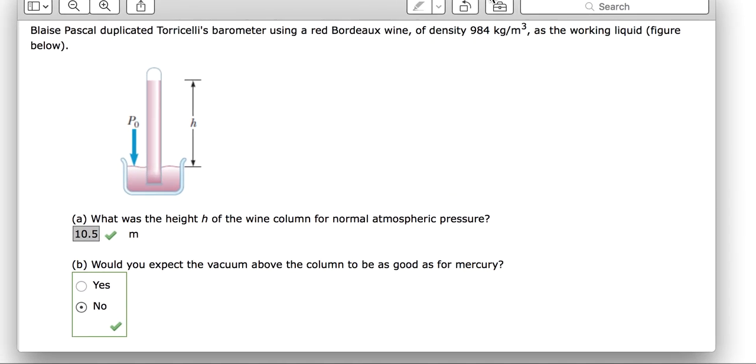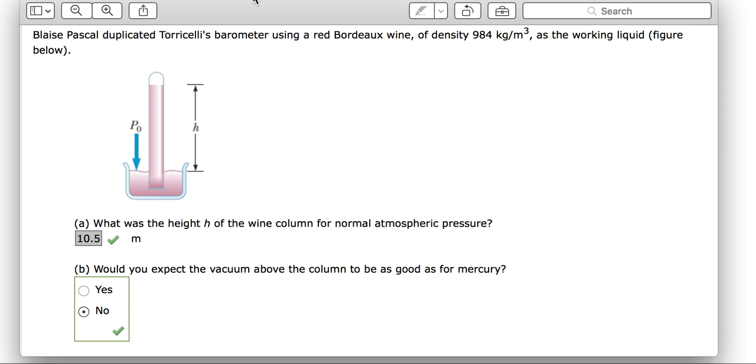There's only one version for this problem. Blaise Pascal duplicated a barometer using wine with density 984 kg/m³ as the working liquid. We need to find the height of the wine column for normal atmospheric pressure.